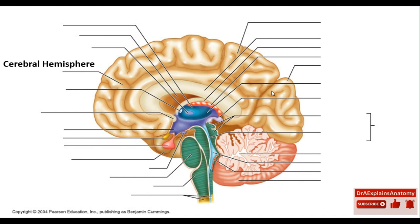This is the cerebral hemisphere. This right here is the corpus callosum. The corpus callosum is the structure that connects both cerebral hemispheres. Earlier, we mentioned that the two cerebral hemispheres are separated by the longitudinal fissure. The corpus callosum is where the two cerebral hemispheres connect.